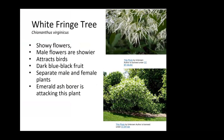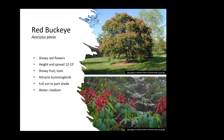Red buckeye — we have about 14 of these to sell in the native plant sale this month. This is a small tree, twelve to fifteen feet tall, with showy red flowers that hummingbirds love. It can take full sun to part shade and medium water. The seeds are toxic to people, but deer can eat them with no problem.